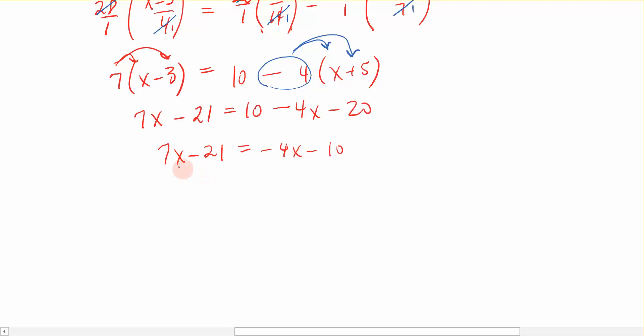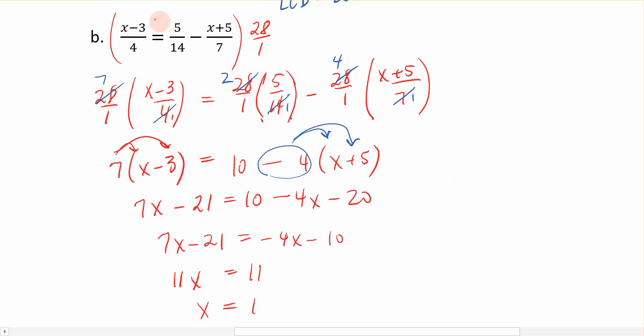Now, I'm going to add 4x to the left because that's going to give me a positive 11x, and I'm going to add 21 to the right. So if I add 21 to the right, that gives me 11. Divide both sides by the coefficient of x, and I find out that x is equal to 1. And that's the solution to this equation, this linear equation that has fractions in it right here.